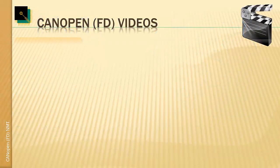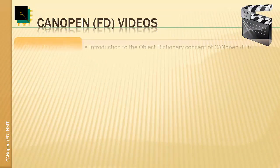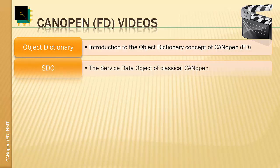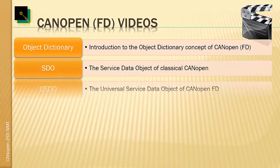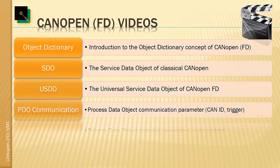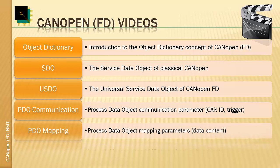This is an overview of the different videos available. The object dictionary introduction gave you an introduction to the concept of the object dictionary used in CANopen. The SDO and USDO are the service data accesses used in classical CANopen and CANopen FD. We also had two PDO chapters: one for PDO communication and one for PDO mapping, which shows how process data is put into a message, and when and how it is triggered.